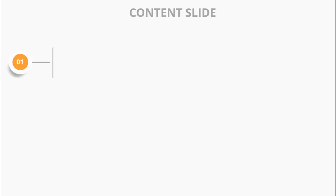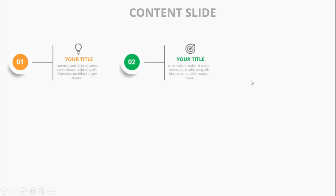In today's tutorial I'm going to show you how to create a simple content slide in PowerPoint. This is how the slide looks — when I click it will show you option 1, and you can add your title and detail text along with the icon. When I click with a different color combination it shows option 2.